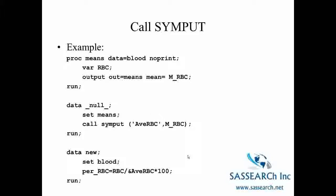Suppose you ran PROC MEANS to compute the mean red blood cells for a group of patients and you wanted to compare individual patient values against the mean red blood cell value. In this first bit of code we are creating an output data set called means and it consists of just one observation and one variable. And the one observation is the total mean RBC for this group of patients from the data set blood.